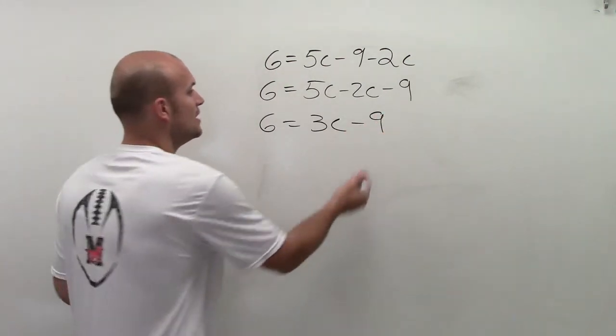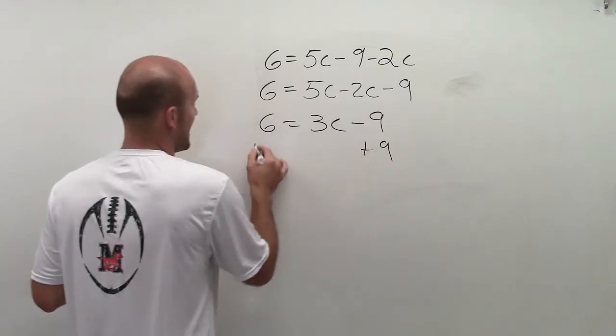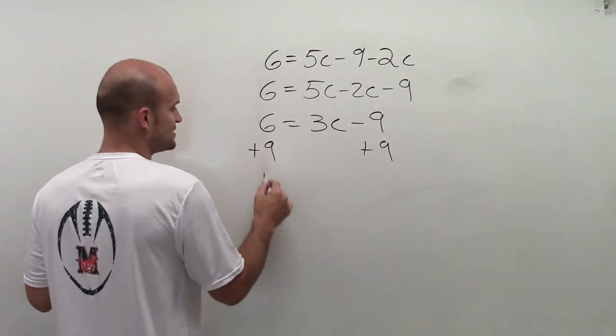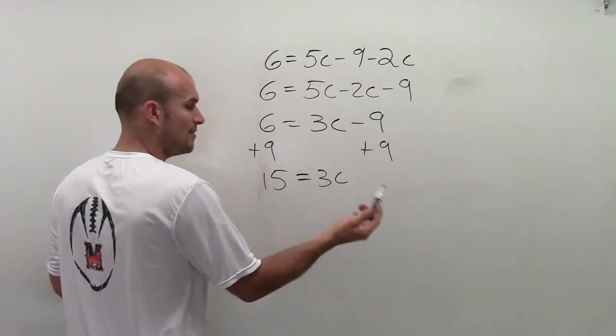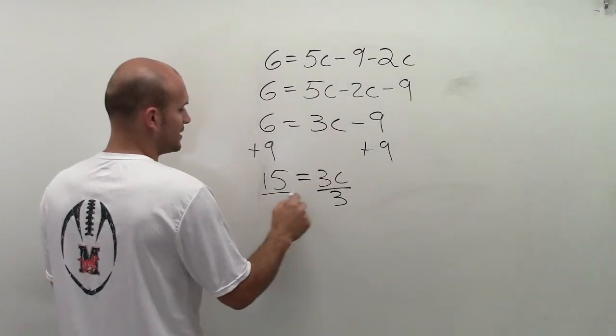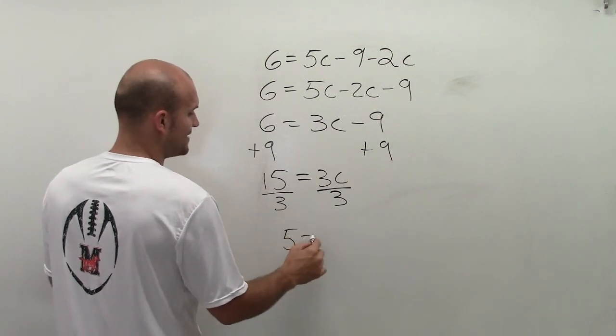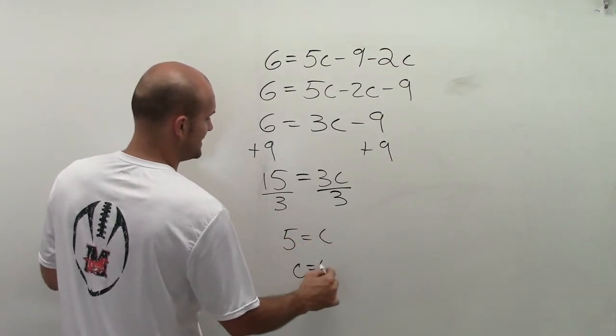Undo subtraction of 9 by adding the 9 to both sides by addition property of equality. I get 15 equals 3c. Then I'll do division property of equality to divide by 3, and I get 5 equals c. c equals 5.